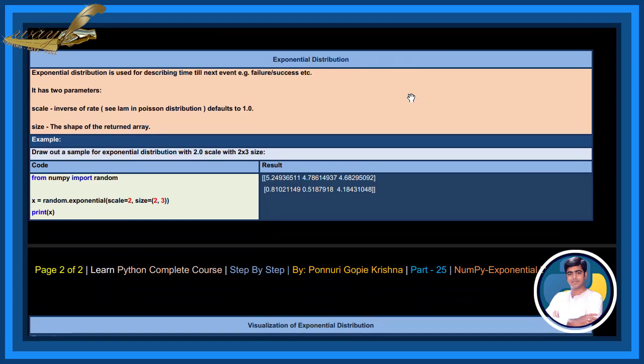Exponential distribution is used for describing time till next event, for example, failure or success, etc.